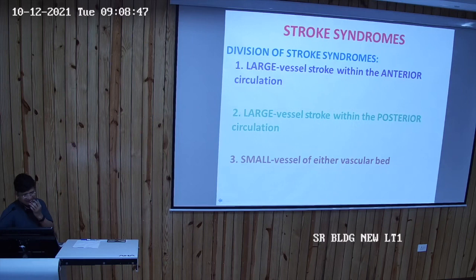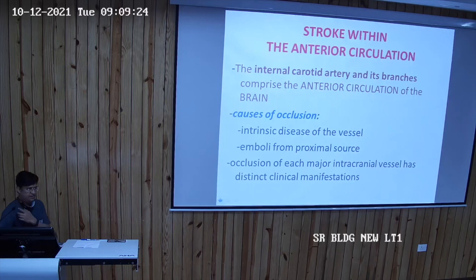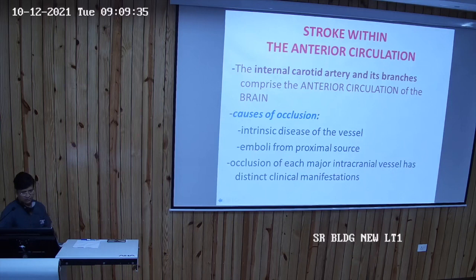What is anterior circulation? The internal carotid artery and its branches comprise the anterior circulation of the brain. From the arch of aorta, the first branch is the right brachiocephalic artery, which gives rise to the right subclavian artery and the right common carotid artery. Then there is the left common carotid artery and left subclavian artery. The common carotid artery gives rise to the internal carotid artery and the external carotid artery, and this internal carotid artery and its branches form the anterior circulation of the brain.